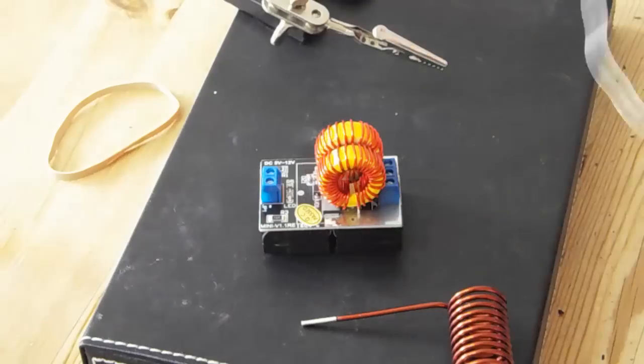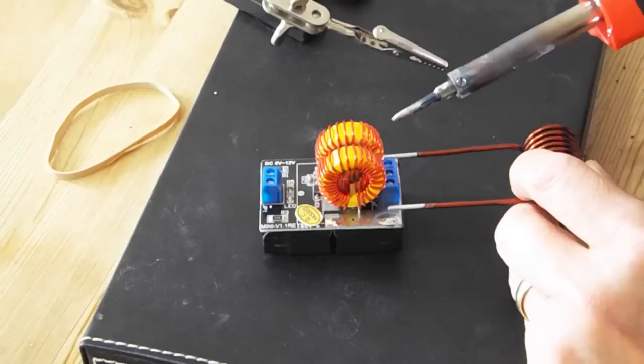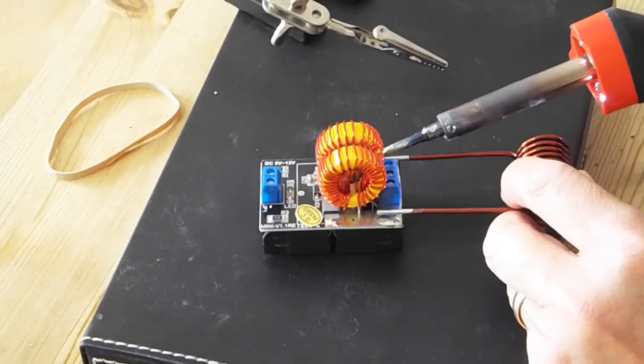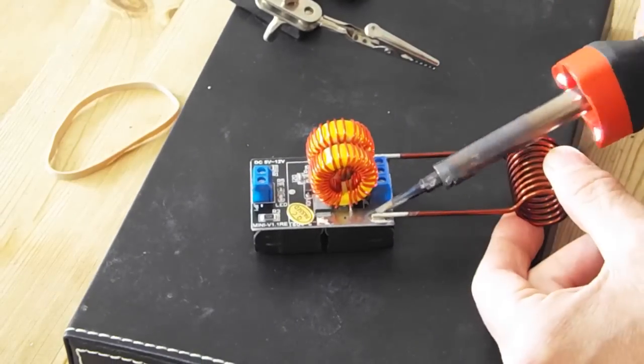There is a little bit of soldering required, a little bit of construction, nothing major. Just need to solder the induction coil onto the chassis of the board. Once you perform this simple task, you're ready to go.